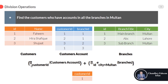By using projection operation we are going to select customer id from the customer account table. From the branches table, we are going to select only the id column by using selection operation, where the predicate condition is city equal to Multan from the branches table. This means we use projection to select the id column and selection operation to filter only rows where the city value equals Multan from the branches table.